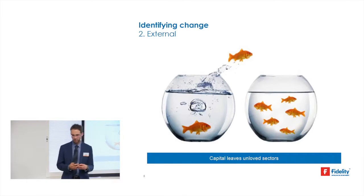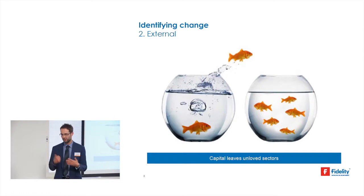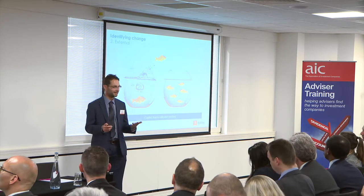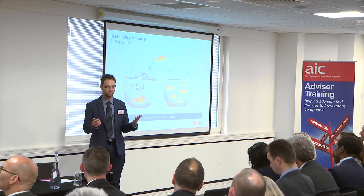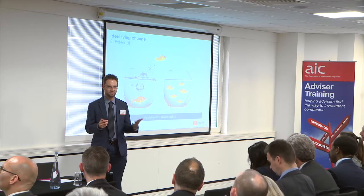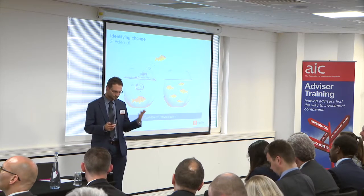The second type of change I look for is external — a change in the industry in which a company operates. One thing I really like to see is when the fortunes of an industry are bad and returns have been falling: is capital being withdrawn, or are competitors going out of business? I particularly like to see that happening because it means returns are likely to increase for everyone that's left. The banking sector is an example, where many companies withdrew through the crisis and there was big consolidation — and that's one of the big holdings in the fund today.